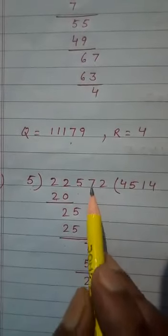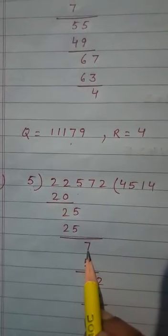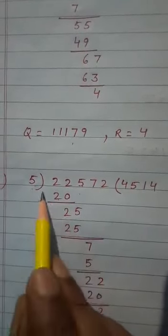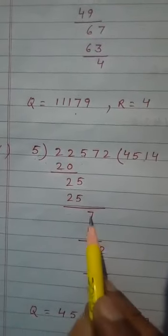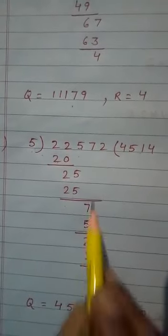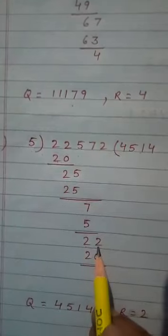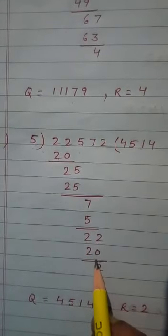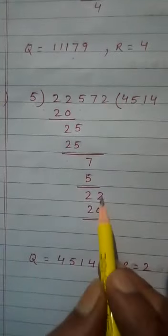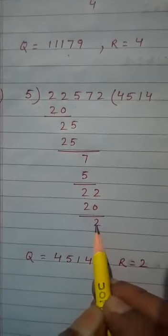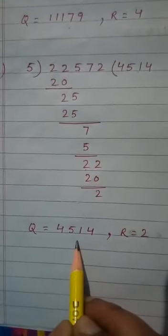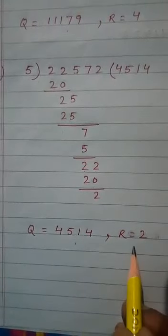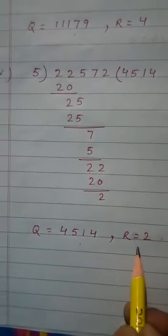Now 7, this 7 is right here. So 5×1 is 5. So 7-5 is 2. And this 2, we write here. So 5×4 is 20. So 2-0 is 2. Now quotient is 4,514 and remainder is 2.